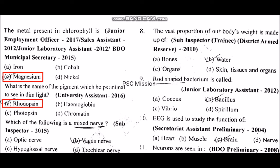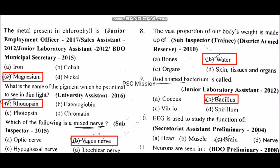Which of the following is a mixed nerve? The vast proportion of our body's weight is made up of water. Rod-shaped bacterium is called bacillus.